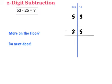3 and 5, 5 is the bigger number. That follows the rule more on the floor, go next door, so I need to go over here to my tens place. If I have 5 tens and I borrow 1 to give 10 to the ones place, I now have 4 tens.